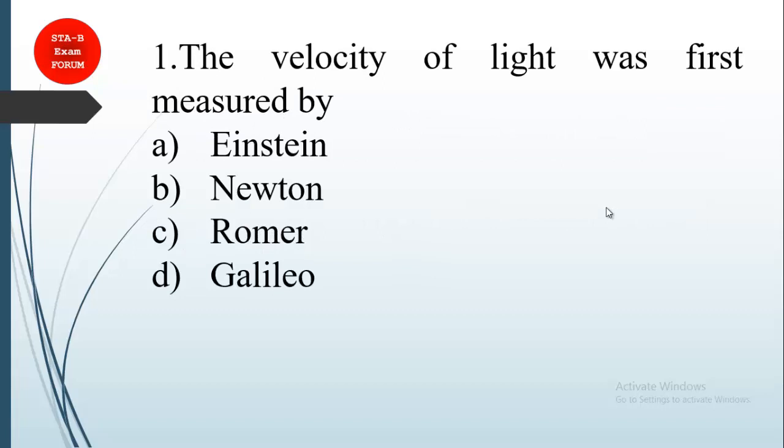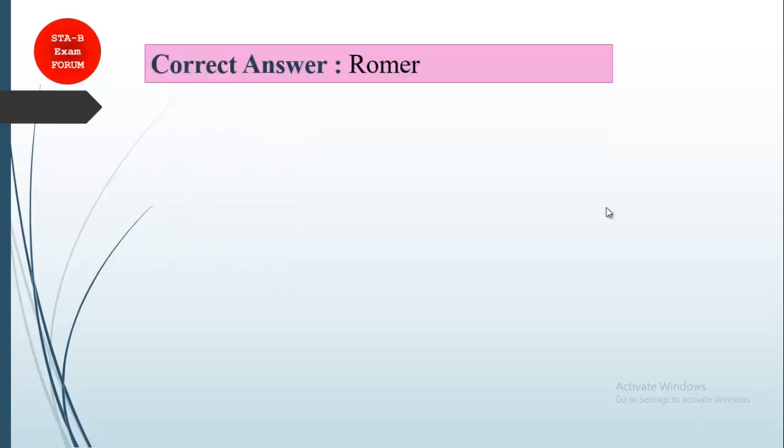The first question asked is: the velocity of light was first measured by? We will use the elimination method. As you know, Einstein is famous for theory of relativity and Newton is famous for his Newton laws of motion. So the correct answer is Romer. Romer was the first person who measured the velocity of light.